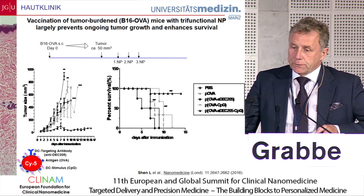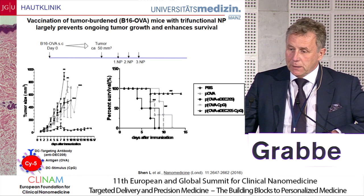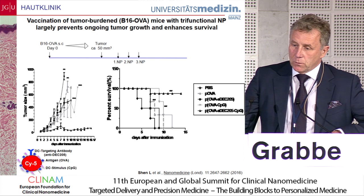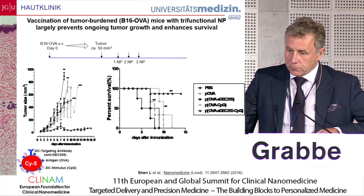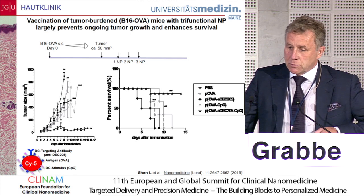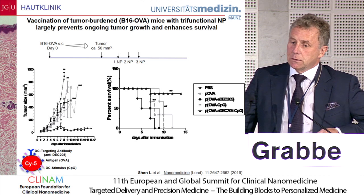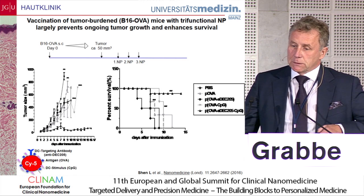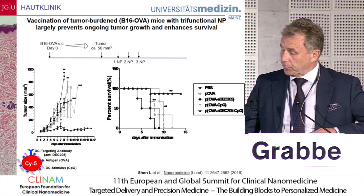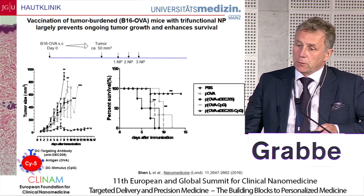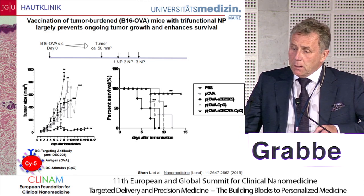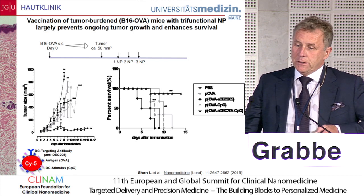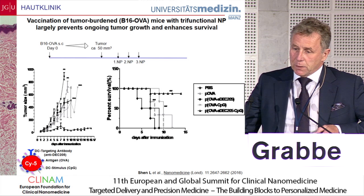The trifunctional vaccine carrying antigen, CPG as an immune activant, and targeted with the DEC-205 antibody to dendritic cells gave us pretty profound tumor control in this therapeutic model. We injected the tumor first, and then after tumor take, we injected the nanoparticles and were able to control tumor growth very profoundly. Almost all of the mice survived. We were positively surprised by this result, since it compared favorably to other similar published approaches.